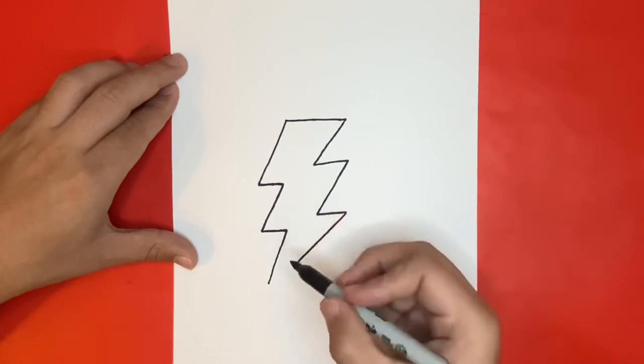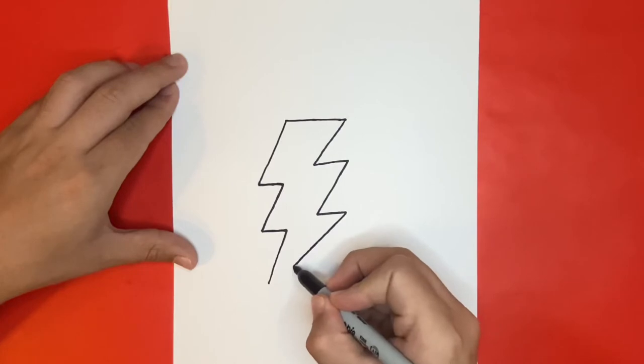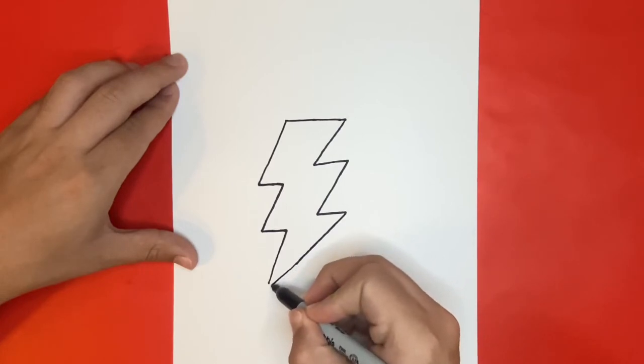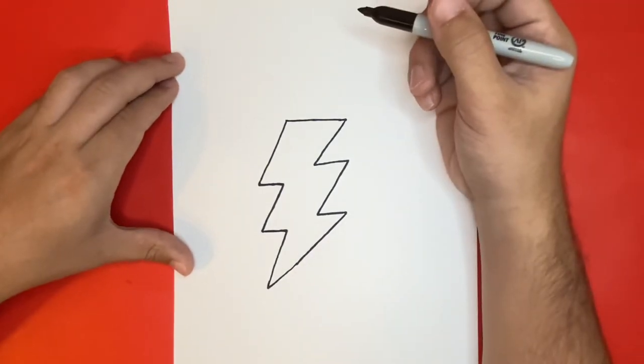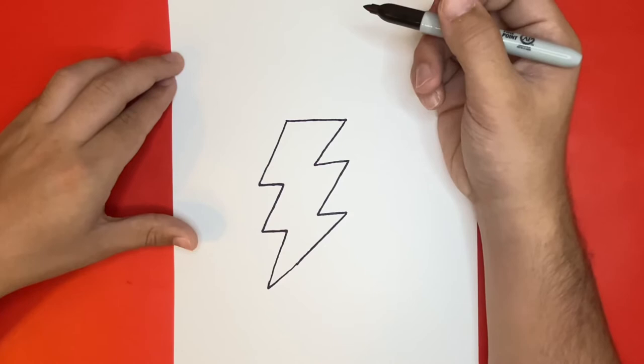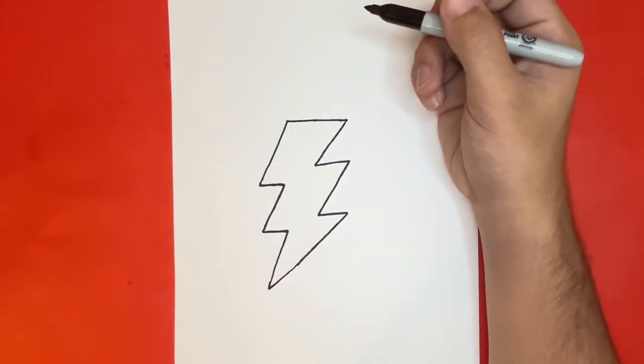So as of right now I'm all done drawing the outline of my lightning bolt, but I'm going to go back over some of the lines and make sure that they're a little bit more bold than they currently are.